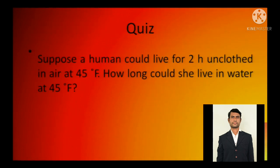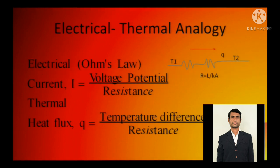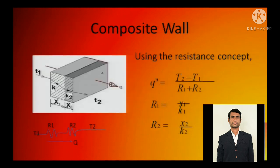Suppose a human could live for 2 hours unclothed in air at 45 degrees Fahrenheit. How long could she live in water at 45 degrees Fahrenheit? So that is a good question you can solve later. I have just explained the electrical thermal analogy: i equals V by r, so q equals delta T by r.